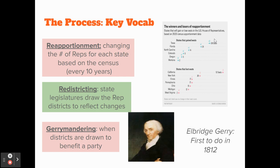Gerrymandering is nicknamed after Elbridge Gerry, who was the governor of Massachusetts in the early 1800s. He was the first to encourage his political party to draw districts in a way that would benefit his party. The goal is to include as many registered voters from your party in a district to give your party an advantage.